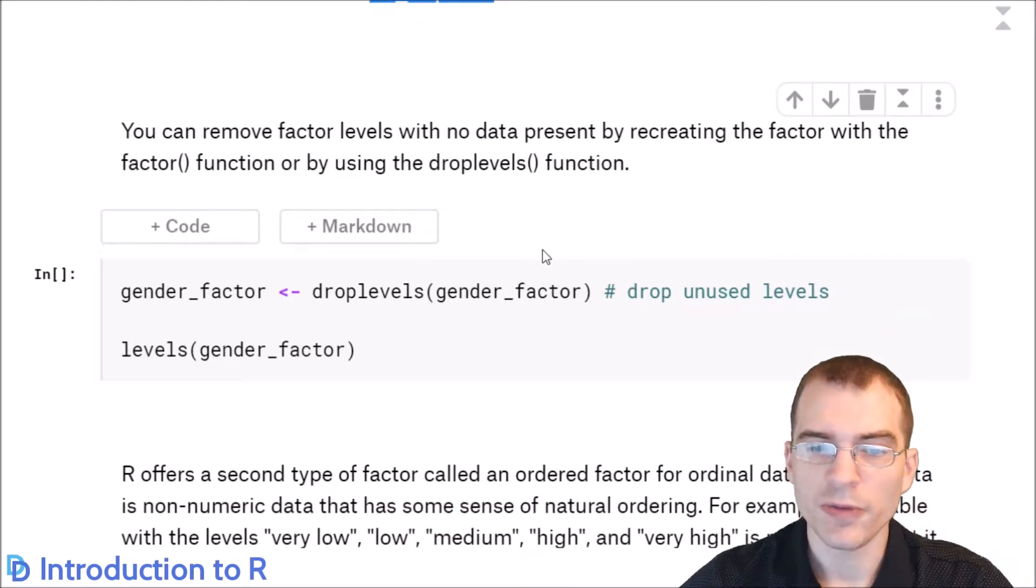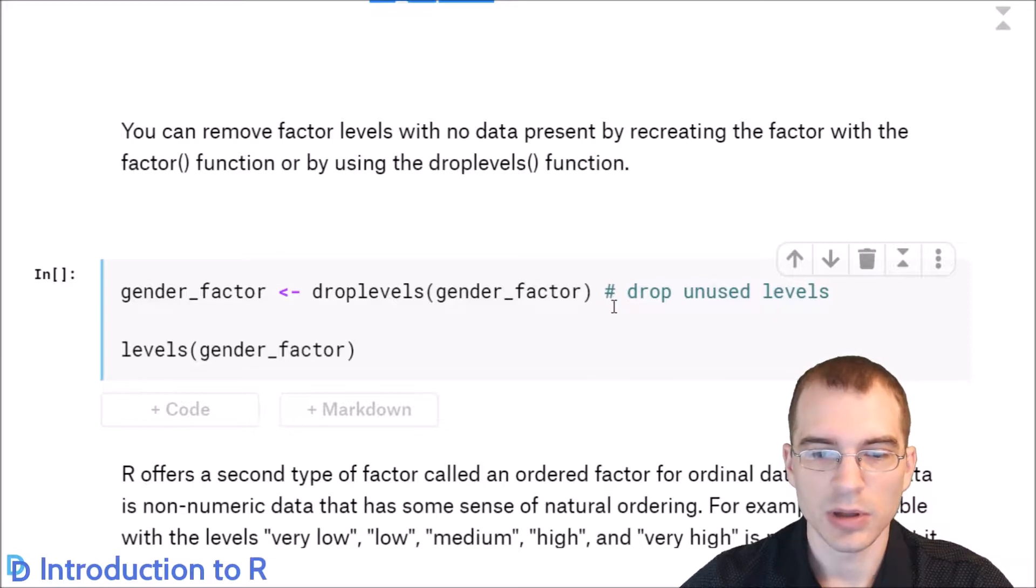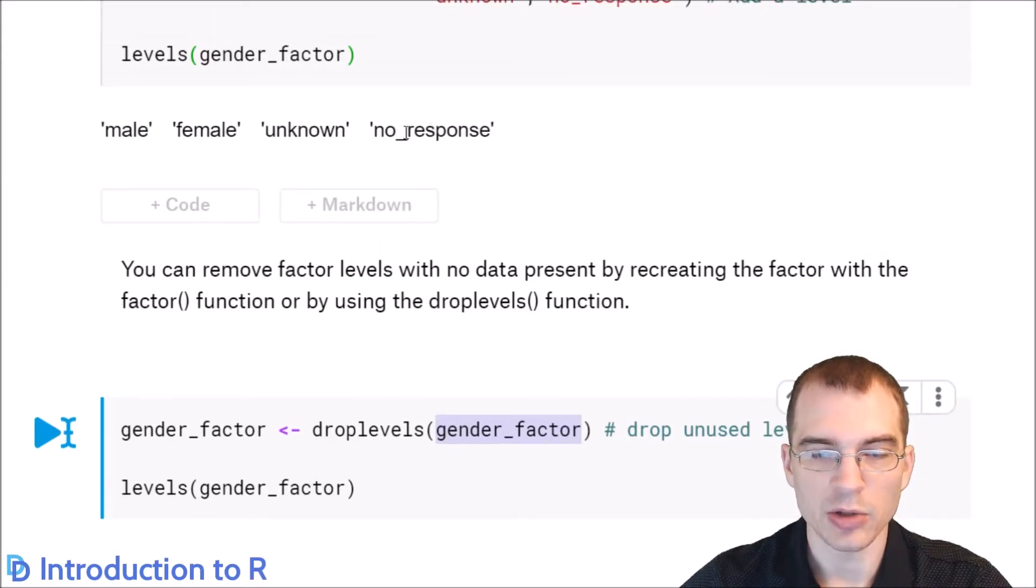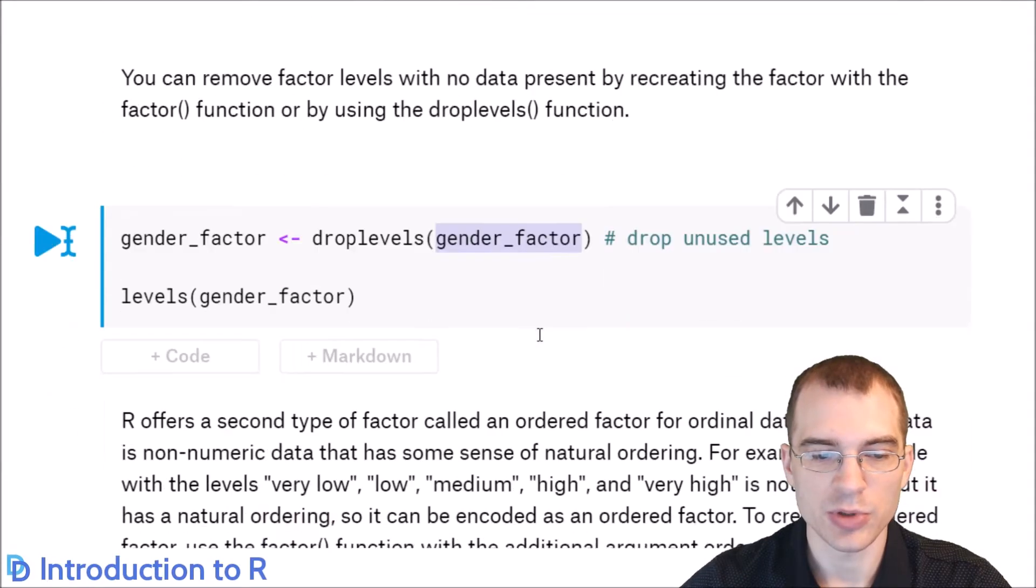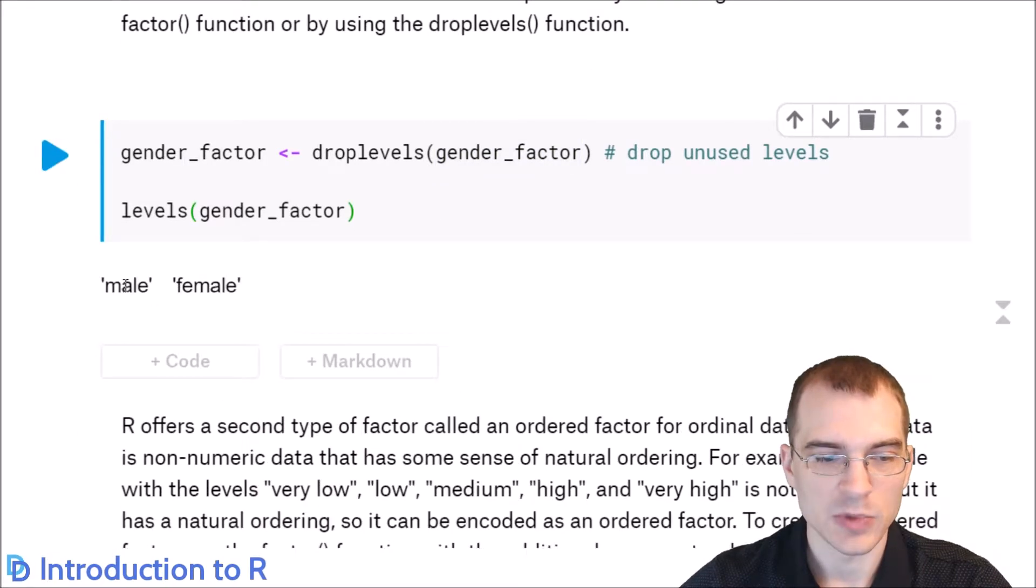Now you can remove factor levels that don't have any actual data present for them by recreating the factor with the factor function, or you can use drop levels. And drop levels will just discard any categories that don't actually have any data entries for them. So here we're resaving our factor, and we're saving it as drop levels of this factor function. So this will drop any unused levels, which both unknown and noResponse are unused, so both of those should be gotten rid of here. We're left with two.